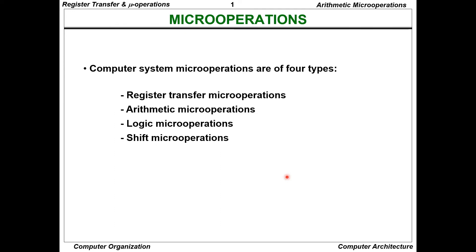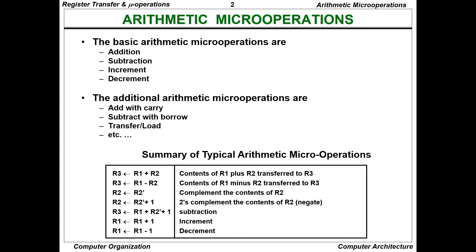What are arithmetic micro-operations? As the name suggests, arithmetic micro-operations include operations like addition, subtraction, multiplication, and division. The basic arithmetic micro-operations are addition, subtraction, increment, and decrement. Additional arithmetic micro-operations include add with carry, subtract with borrow, and transfer or load.